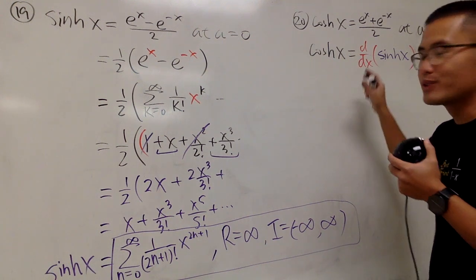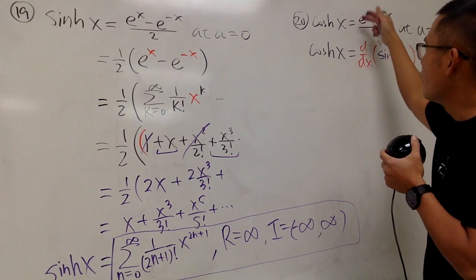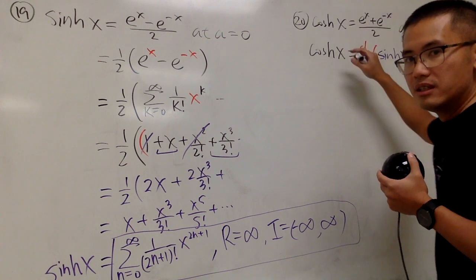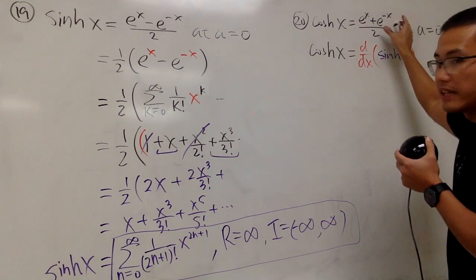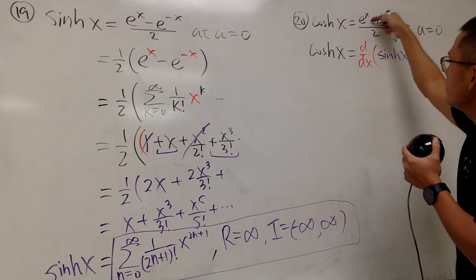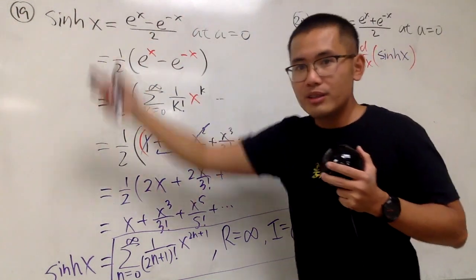What we can do is you can just go ahead and do the derivative right here. The 1 half stays, e to the x stays, the derivative of e to the negative x stays, but don't forget to multiply by negative 1 because of the chain rule. So you have a negative right here, and that will be sinh.